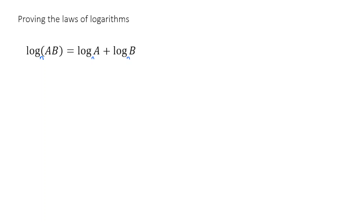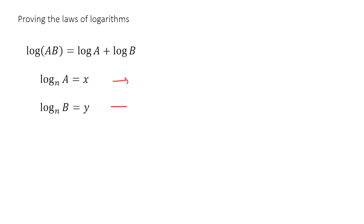In order to do this proof, we've got to define two dummy variables. We're going to take log a and log b and call them x and y respectively. So log a is x and log b is y, as I've shown here. Now if I take these, I can actually rewrite them — I can rearrange them into exponential form. So if I rearrange the first one, I get a is equal to n to the power of x, and rearranging the second gives b is equal to n to the power of y. Just double check for yourself that that is indeed true.